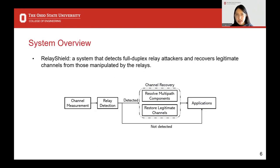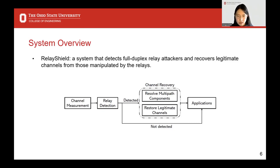Based on these insights, we propose our system RelayShell, which detects full duplex relay attackers and recovers legitimate channels from those manipulated by the relays. RelayShell consists of a relay detection module and a channel recovery module. The input channel measurement is first sent to the relay detection module. If no attacker is detected, the channel can be directly used for applications. If an attacker is detected, the channel is further sent to the channel recovery module, and the recovered output channel is then sent to the applications.